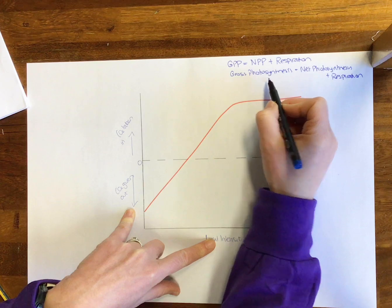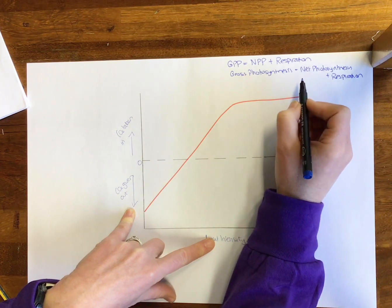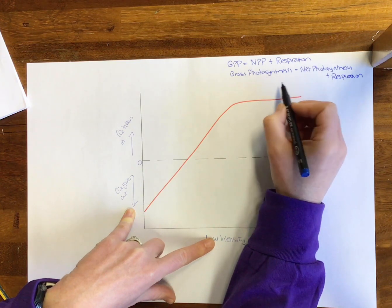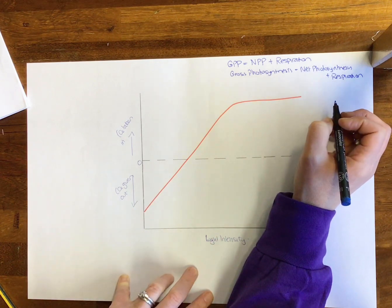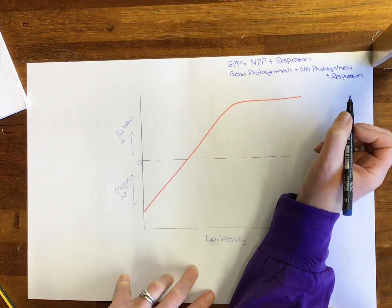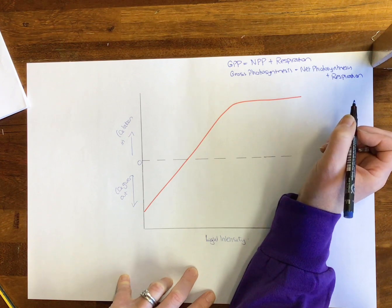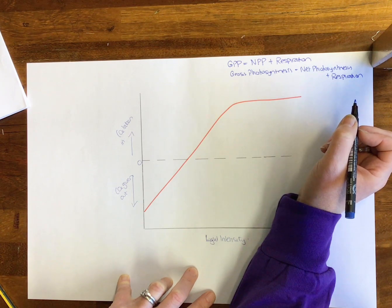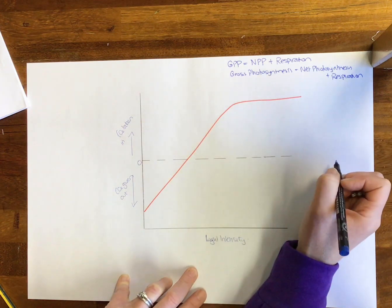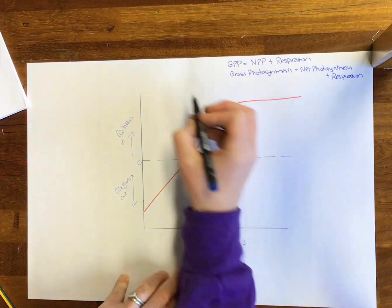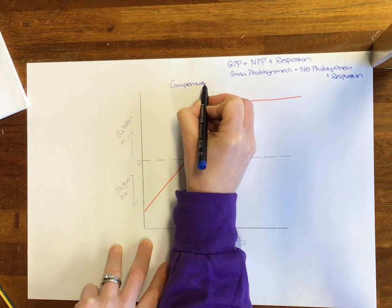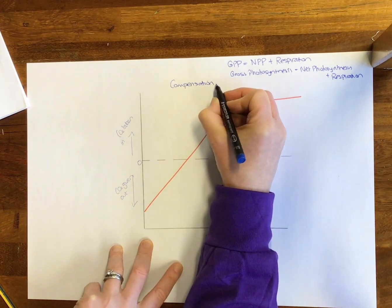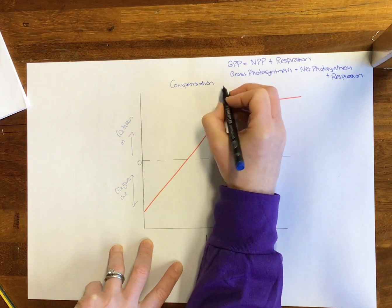Gross or net photosynthesis gives information on the carbohydrate produced by a single plant or part of a plant. It can be measured in terms of carbon dioxide or oxygen exchange, or the change in carbohydrate content in a plant. This leads on to looking at what is known as the compensation point: when does the rate of photosynthesis equal the rate of respiration?